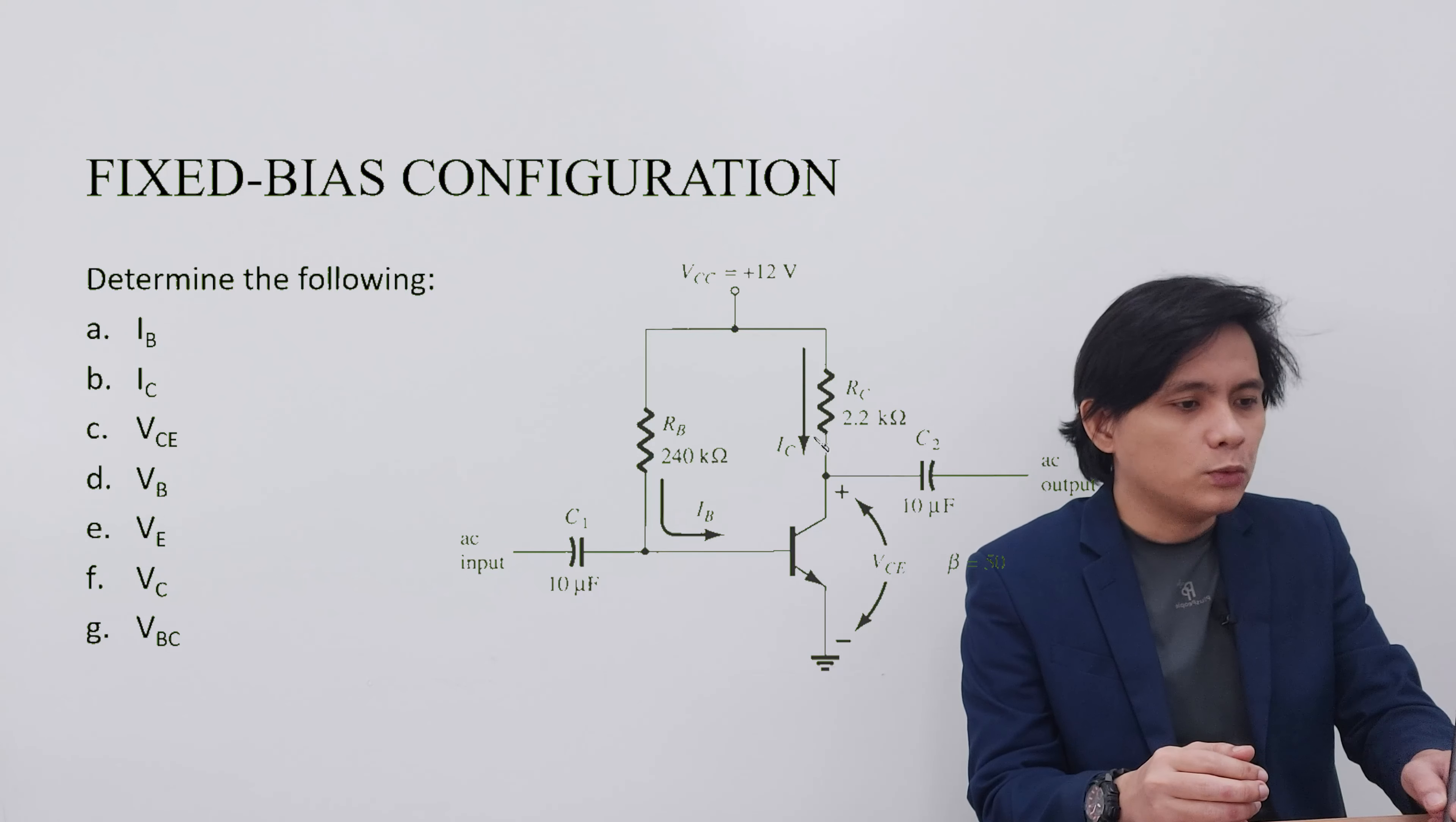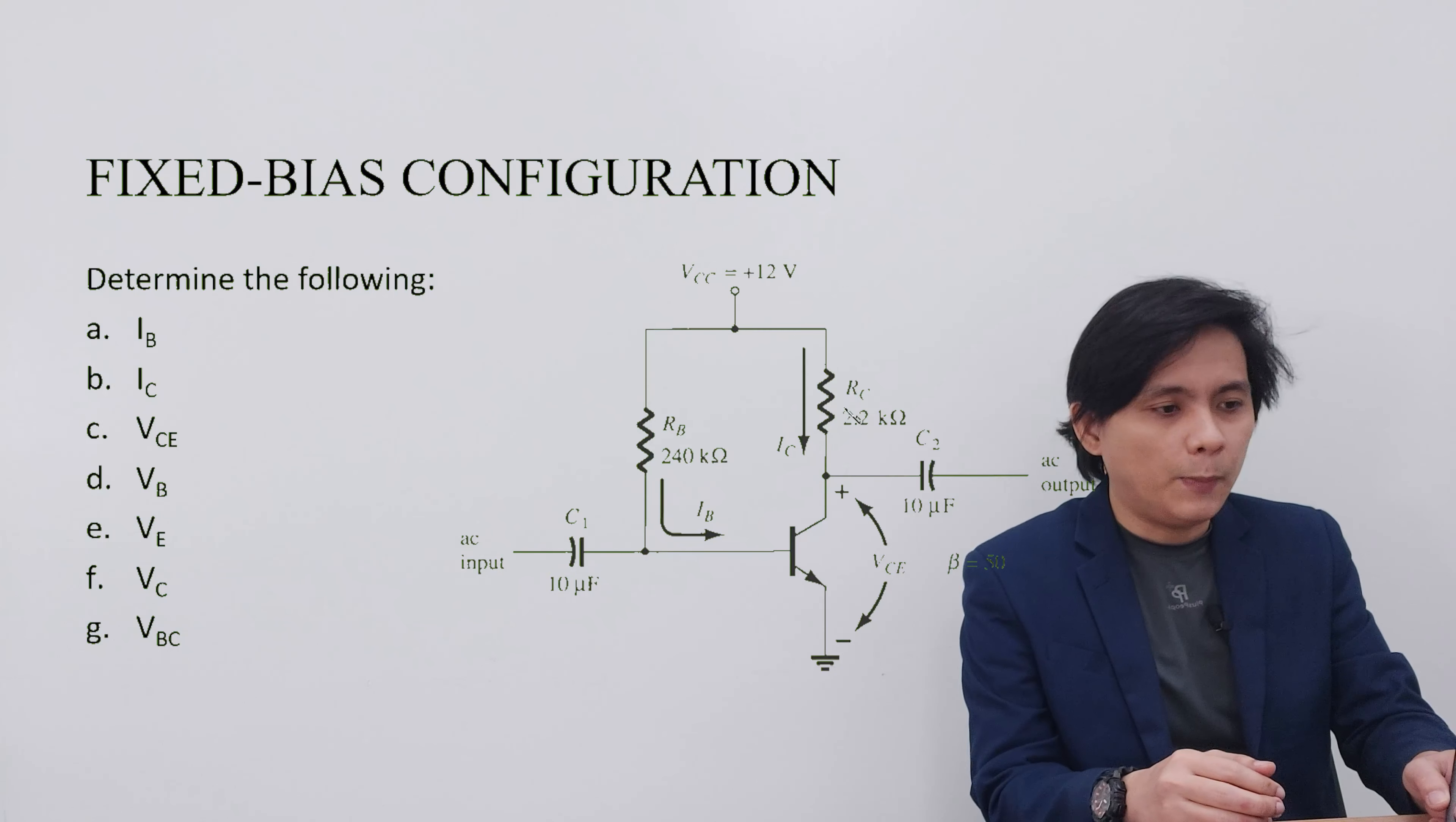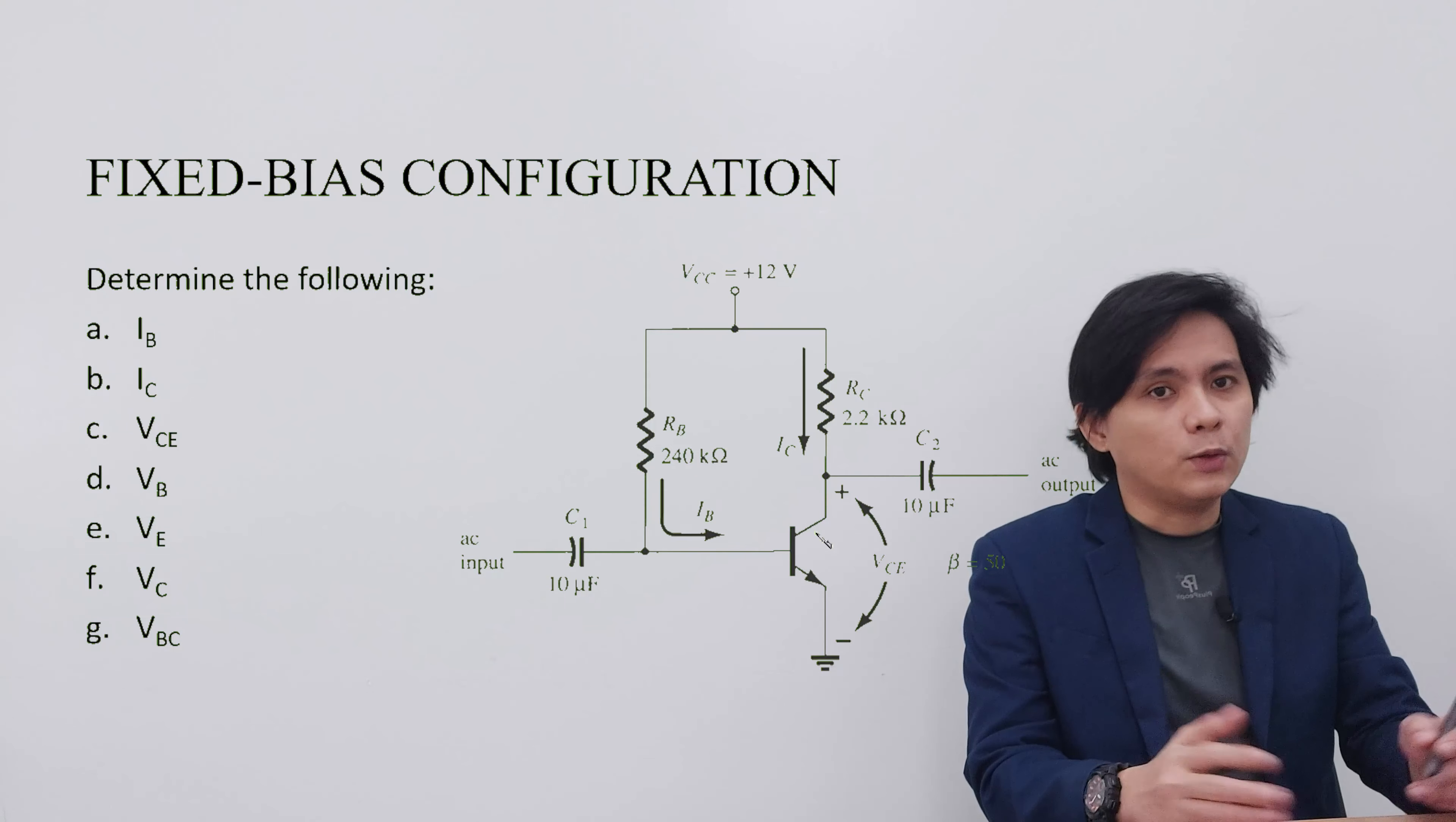Also, the emitter is directly connected to the ground, and there is no RE to be found. And lastly, on the output side of the transistor amplifier, we have the RC and a capacitor for the output.